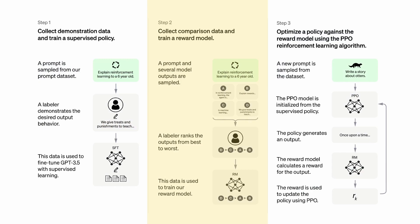Second step: we have a GPT model — a machine — and we give it a prompt. It's the same prompt: 'explain reinforcement learning to a 6-year-old.' We get an output from this model. But you do not run it once; you run the same prompt four times, and you get four different outputs — A, B, C, D — from your model.